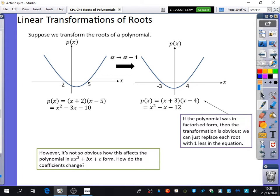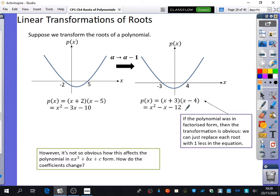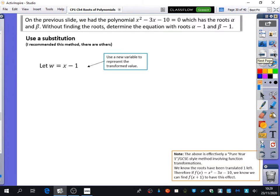It will make a lot more sense when we see this with an example. On the previous slide, we had the polynomial x² - 3x - 10 = 0, which had the roots α and β. Without finding the roots—that's the key phrase they like in this topic—determine the equation that has roots α - 1 and β - 1. The roots have shifted to the left because we're subtracting 1. We're going to try and come up with x² - x - 12 without solving the equation. For quartics and cubics, it's going to be more demanding to do.